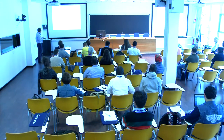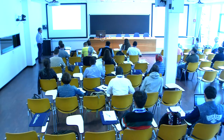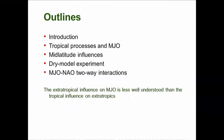I will show results from a dry model experiment that demonstrates the two-way interactions between MJO and the Northern Hemisphere, because there are no tropical processes and no connections. After that, I will talk about the two-way interactions between MJO and NAO, and focus on the NAO impact on the MJO.